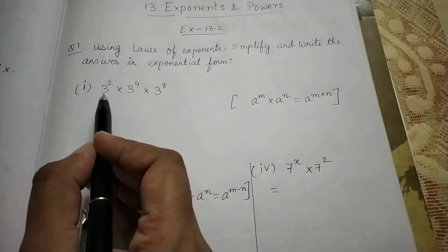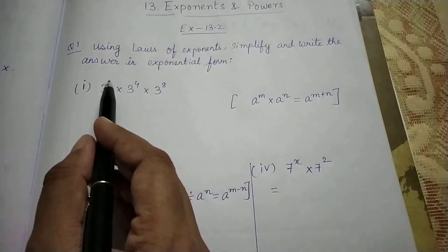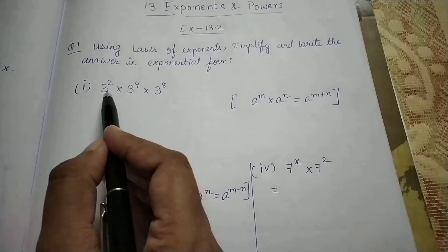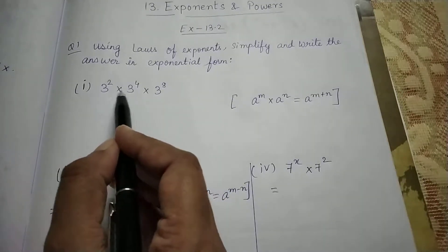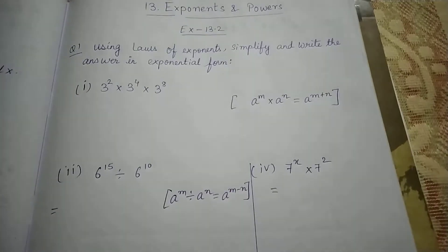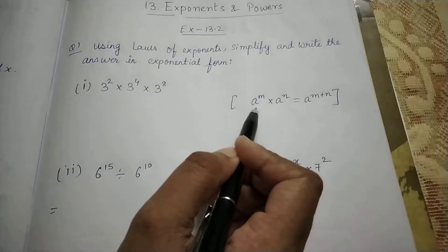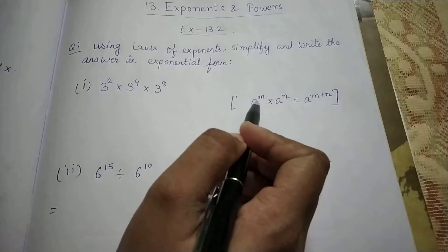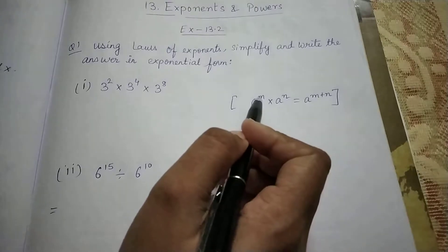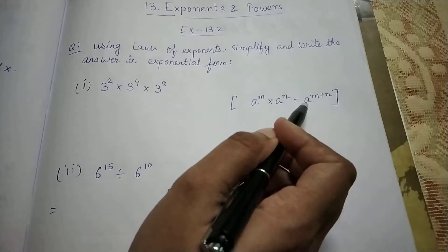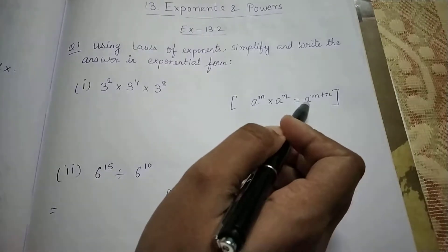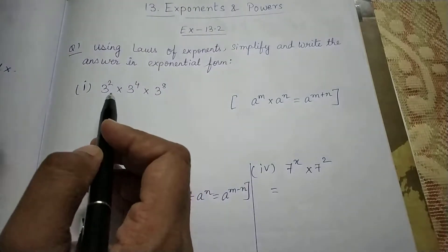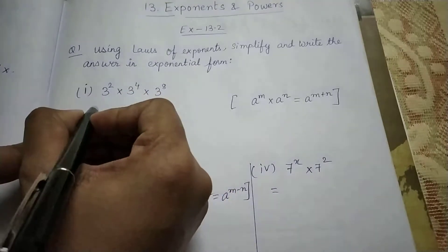The question is: 3 to the power 2, into 3 to the power 4, into 3 to the power 8. I can see the base is the same — 3 is the base — but the powers are different. So which law am I going to apply? I have written: a to the power m, into a to the power n. When the base is same and the powers are different and a multiplication sign is there, you need to add the powers — that is, a to the power m plus n.